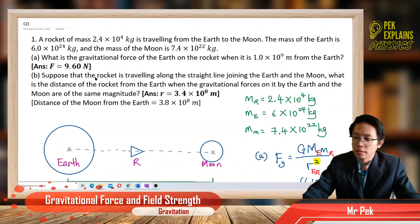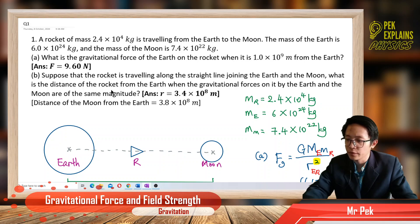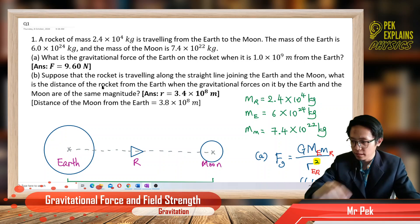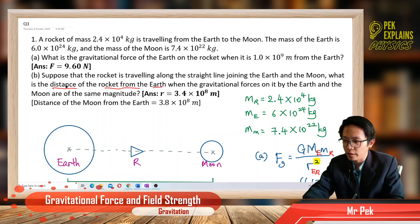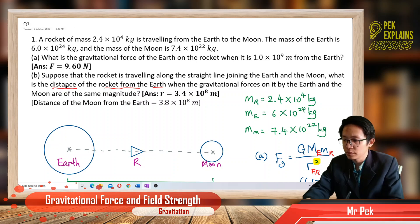Now, suppose that the rocket is traveling along the straight line joining the Earth and the Moon. What is the distance of the rocket from the Earth when the gravitational force on it by the Earth and the Moon are of the same magnitude?